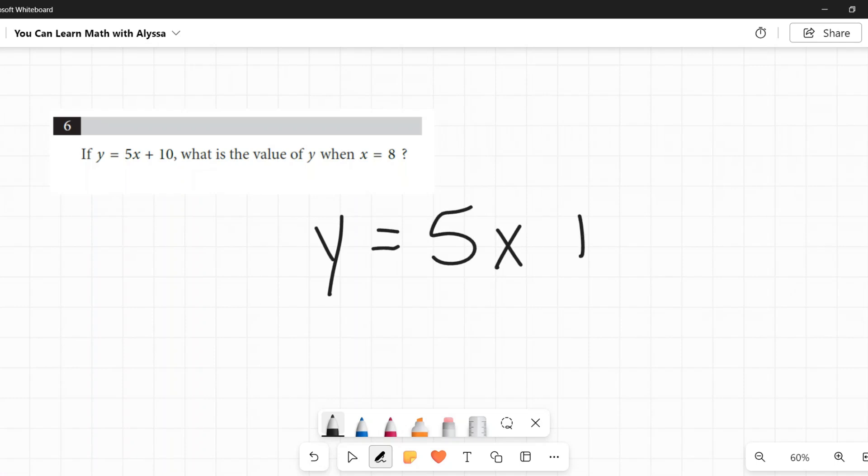So they want us to plug in 8 for x and then do the math. So we have 1x right here. If there had been more than 1x, I would have plugged in an 8 for every x. But here there's only 1x, so I only have to do it once. I'm going to plug in that 8 for x.